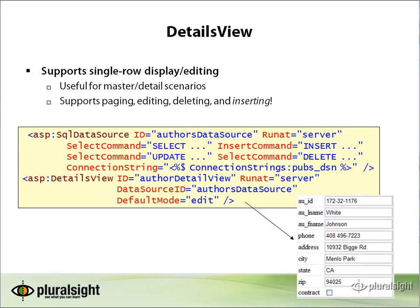The DetailsView control pairs nicely with the GridView for master-detail displays — you let the user select a row in the grid and show details about that row, possibly from a related table. It's similar to classic Access-style applications where you navigate through rows with next/previous/first/last. If you want to show just one row at a time from an underlying result set, DetailsView is the control to use. It supports paging for navigation, and also supports editing, deleting, and inserting — which previously had to be done manually in ASP.NET.